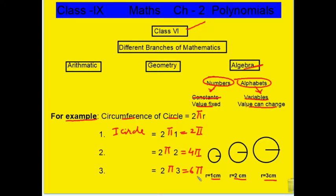Here we can see that π is fixed. And we have said that the value which is fixed is our constant. So π is the constant. It is constant. And the numbers change — that is our variable.